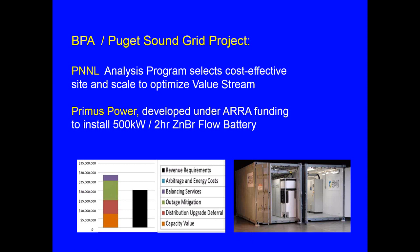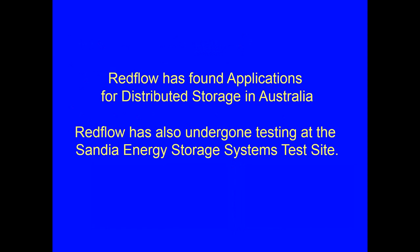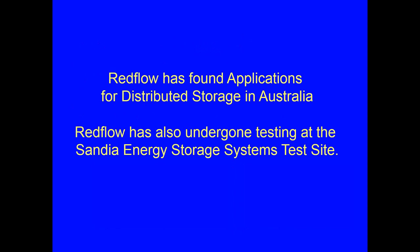In the Puget Sound system, analysis was done to select the most cost-effective site and scale to optimize the value stream — important because when you do this correctly, you come up with a cost-effective project. Primus Power technology was developed under ARRA funding. Redflow Battery has found applications for distributed storage in Australia at a considerable number of locations, and has also undergone testing at the Sandia Energy Storage Systems Test Site. Flow batteries are well on the way towards commercialization and developing market share. We have two good companies that will present their systems today.